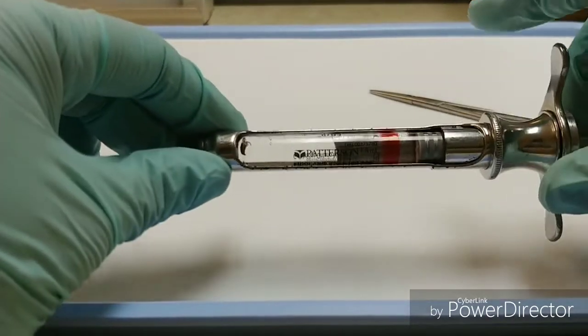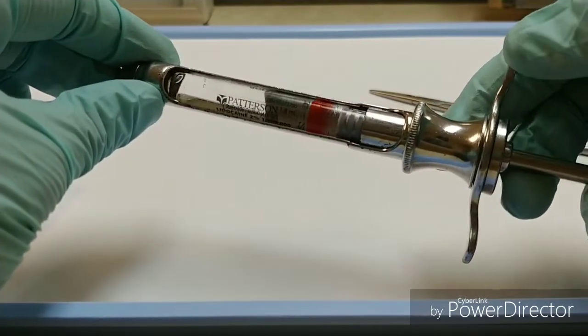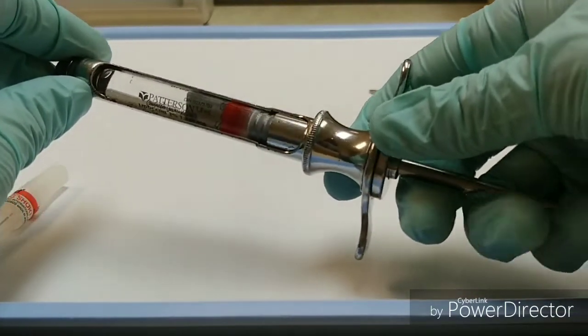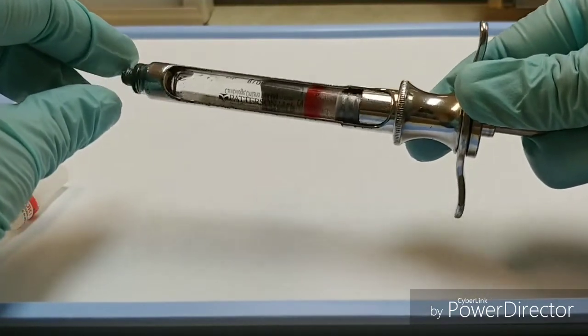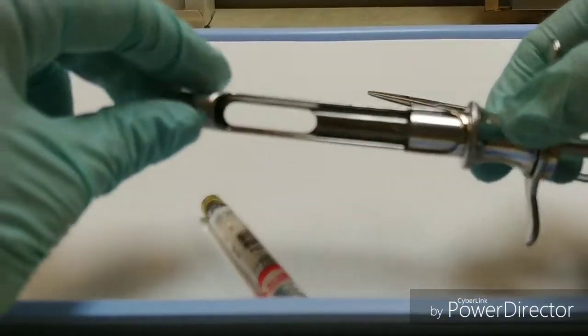Next I'm going to remove the cartridge from the syringe, so I'll have to disengage my harpoon by pulling back on that piston, and then I can just drop this cartridge out.